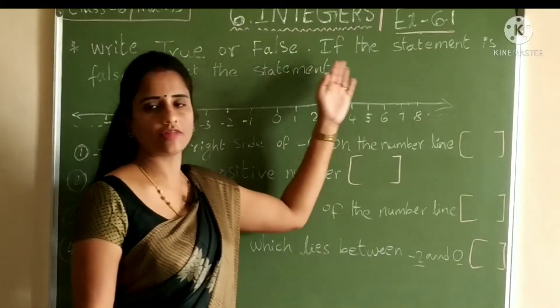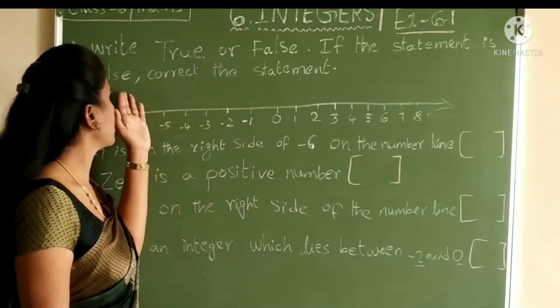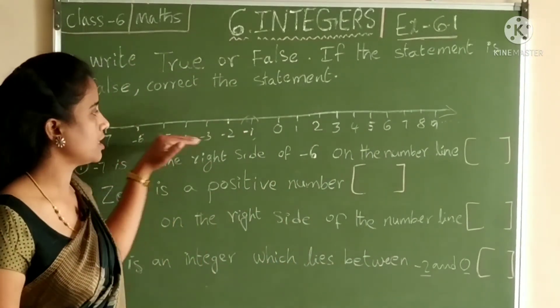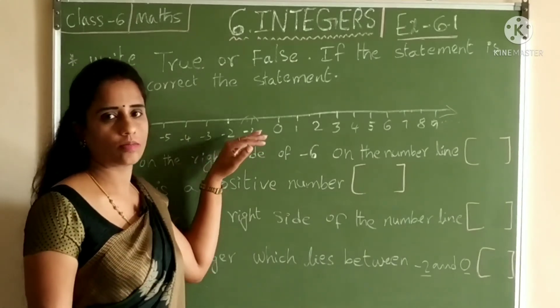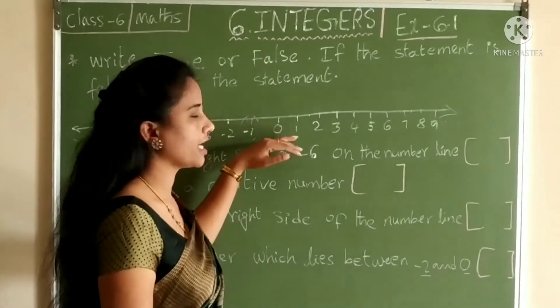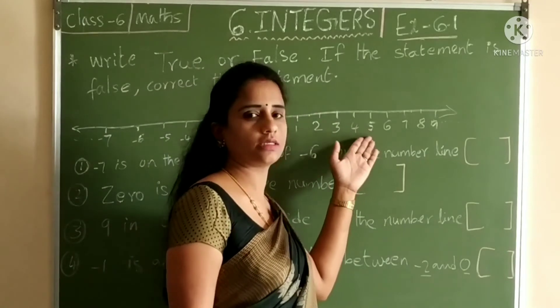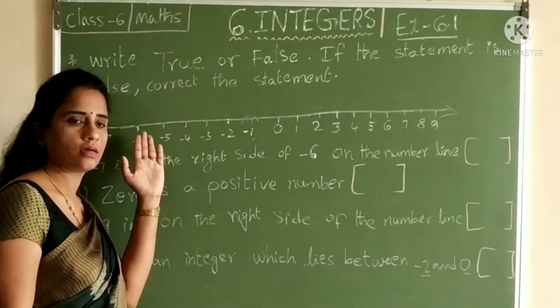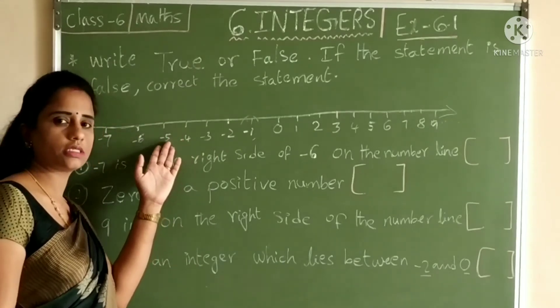Write true or false. If the statement is false, then correct the statement. See the number line. Already we know the properties of number line. The right side of 0 has values that are increasing. The left side of 0 has values that are decreasing.